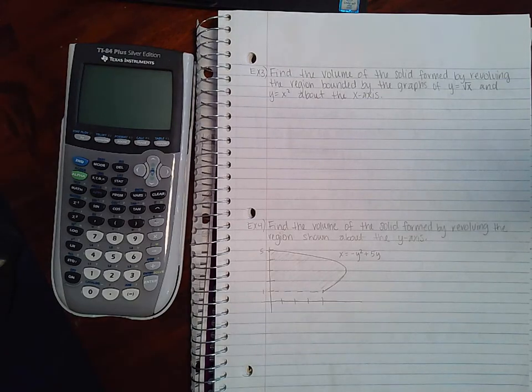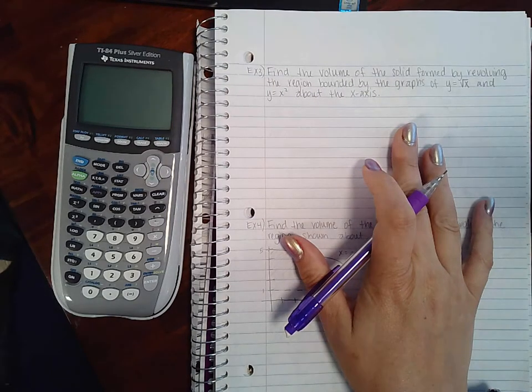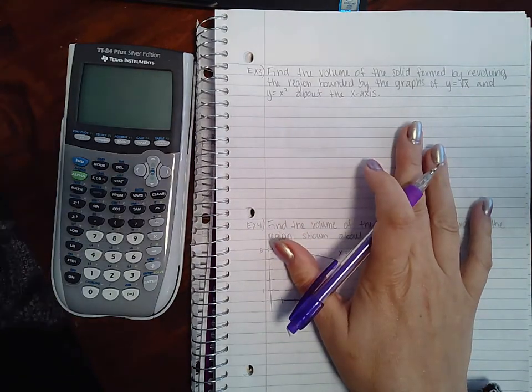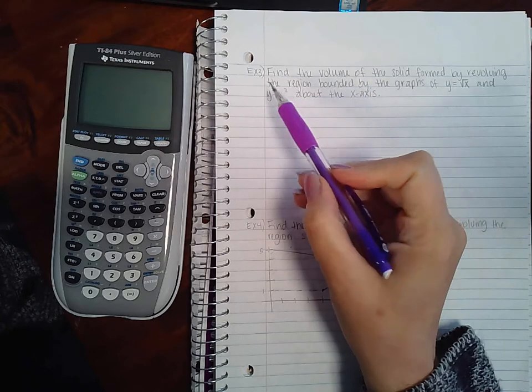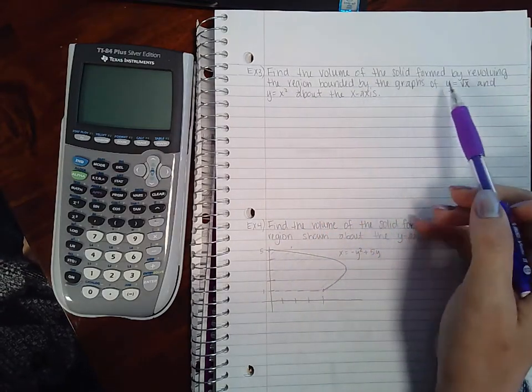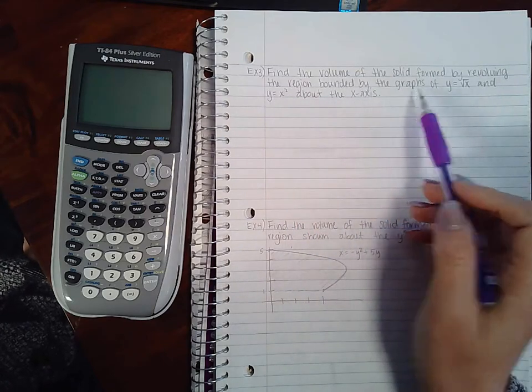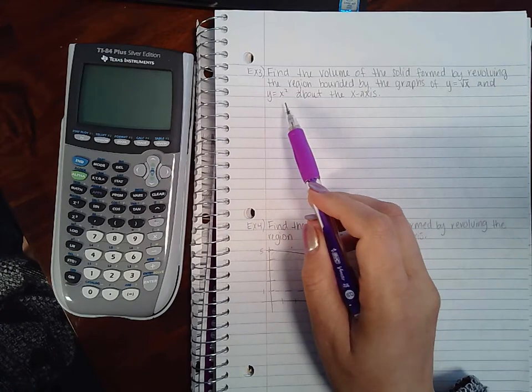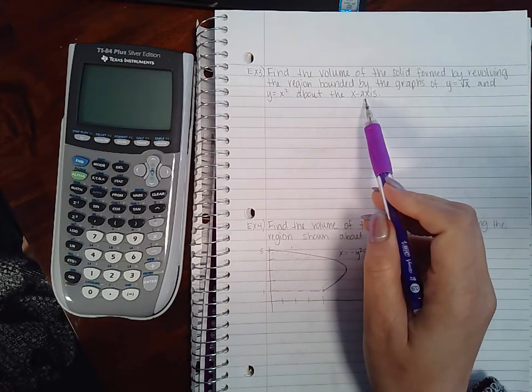Okay, in this video we're going to continue with the examples from section 7.2, which is the disc or washer method. Now example three says find the volume of the solid formed by revolving the region bounded by the graphs of y equals the square root of x and x squared about the x-axis.